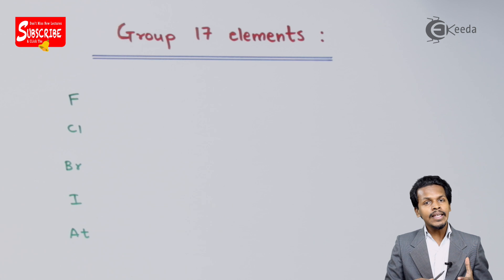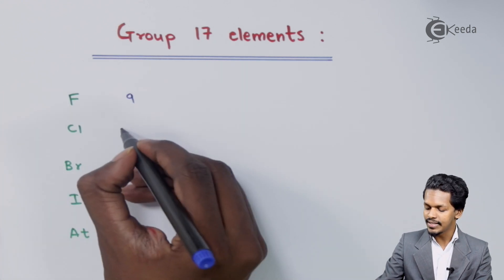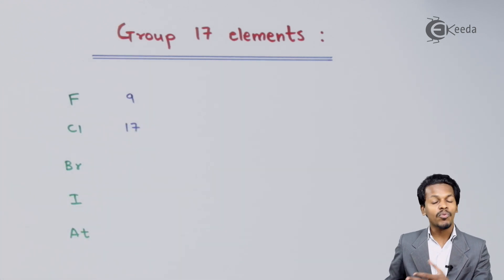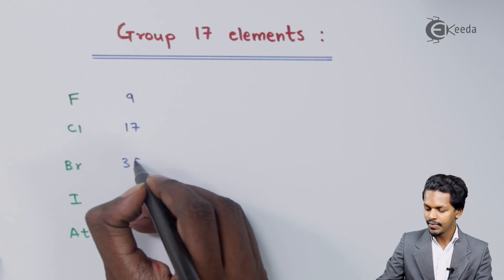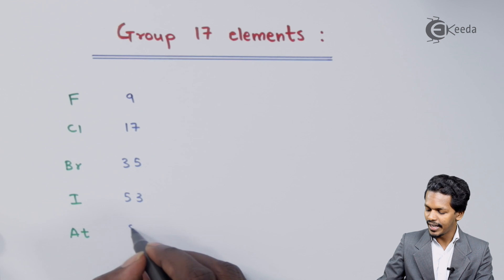If you talk about the atomic number, the atomic number of Fluorine is 9, Chlorine is 17, Bromine is 35, Iodine is 53, and Astatine is 85.